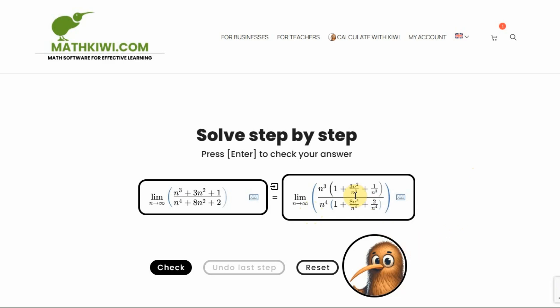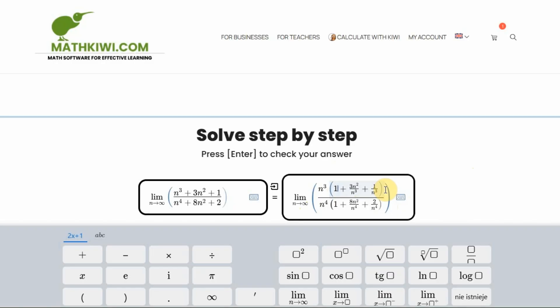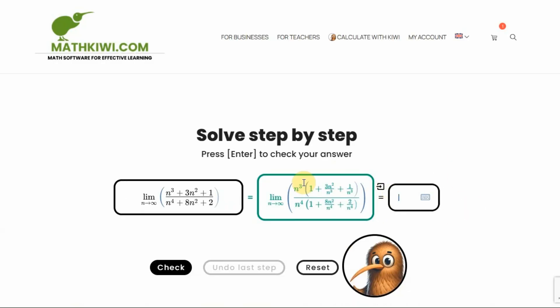Well, you can shorten it a bit further, right? n to the third and n to the fourth will be shortened. Aha, let's send it to the application. There it is. It approved it for us in green. The step is correct, right? By the way, if it were incorrect, if I made a mistake somewhere, something would come out in red here. Let's move on.